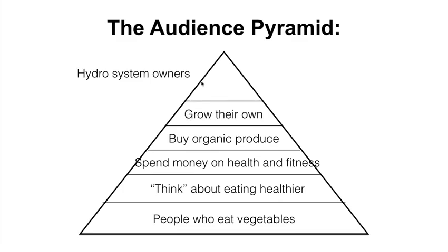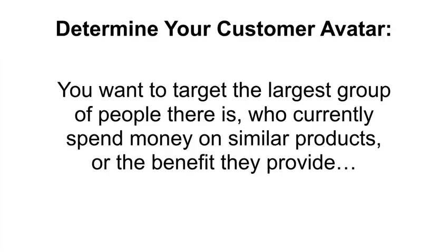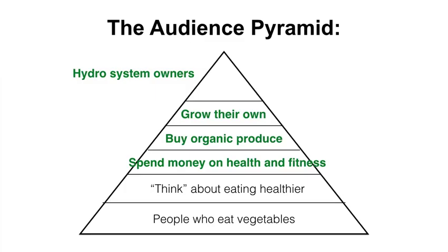If you sell organic produce, market to people who already buy it and offer a better solution. Out of our pyramid, the easiest group would be people at the top who already own a competing product — but that's a really small number of people. Simply put, you want to target the largest group there is who currently spend money on a similar product or the benefit those products provide. For my hydro system, my sales presentation will be directed towards people who actively spend money on products that improve their health and fitness, and then address the rest of the pyramid's specific concerns within the presentation.